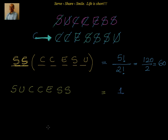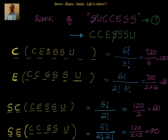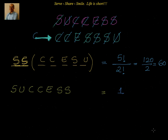Now we add everything up: words starting with C = 120, starting with E = 60, starting with SC = 60, starting with SE = 30, starting with SS = 60, and SUCCESS itself = 1. Adding: 120 + 60 = 180, + 60 = 240, + 30 = 270, + 60 = 330, + 1 = 331. So the rank of the word SUCCESS is 331.